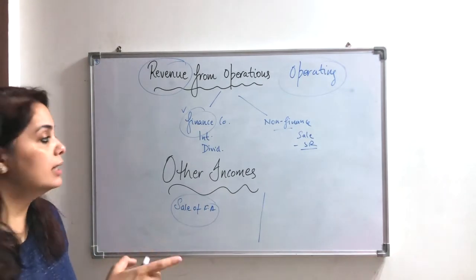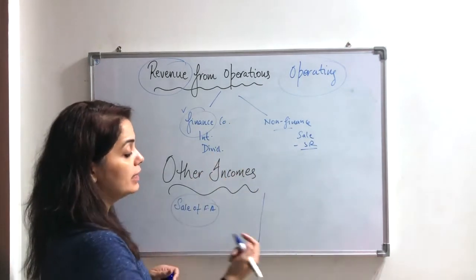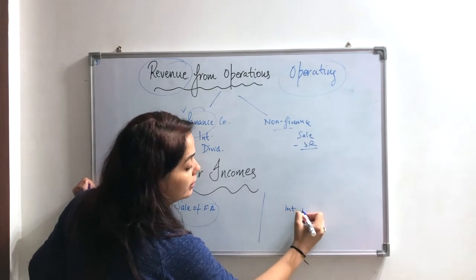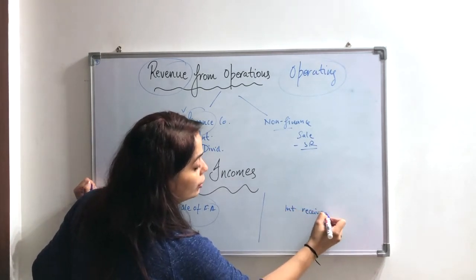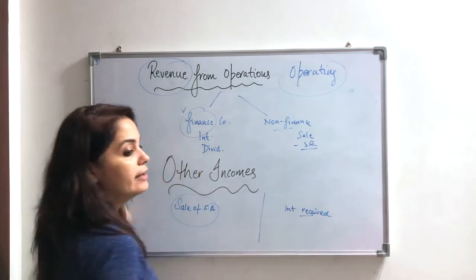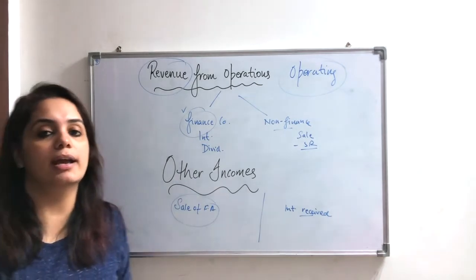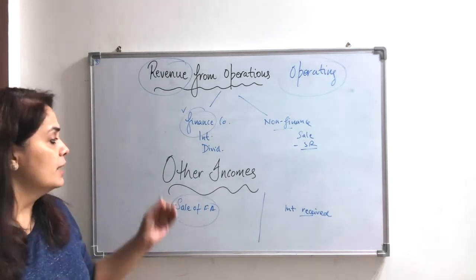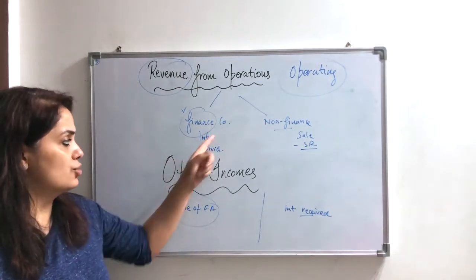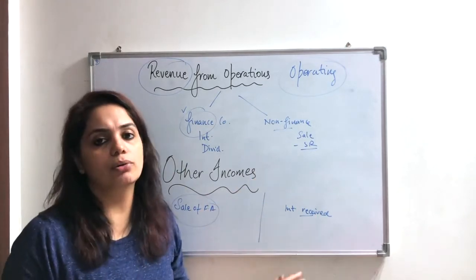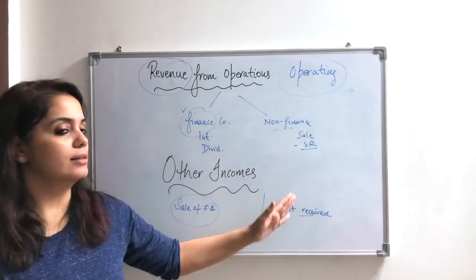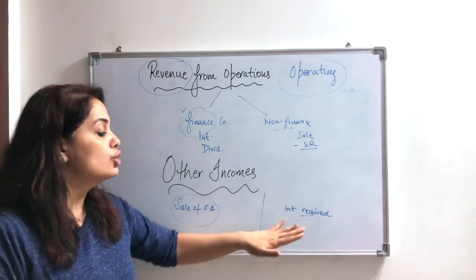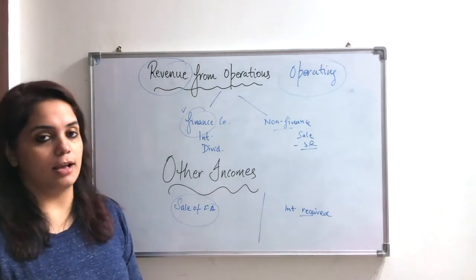Automatically, if there is interest for a non-finance company, then it will appear under other incomes. In other incomes for a non-finance company, there will be interest received, dividend received, commission received. If there is interest on a loan received from a manufacturing company or a trading company, everything comes under other incomes.